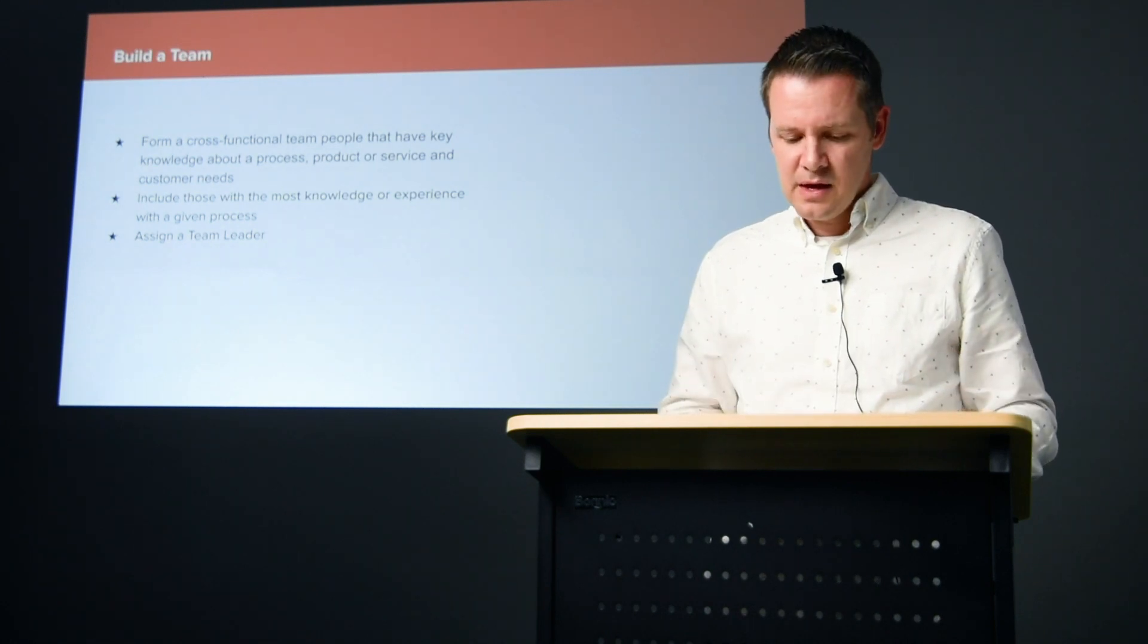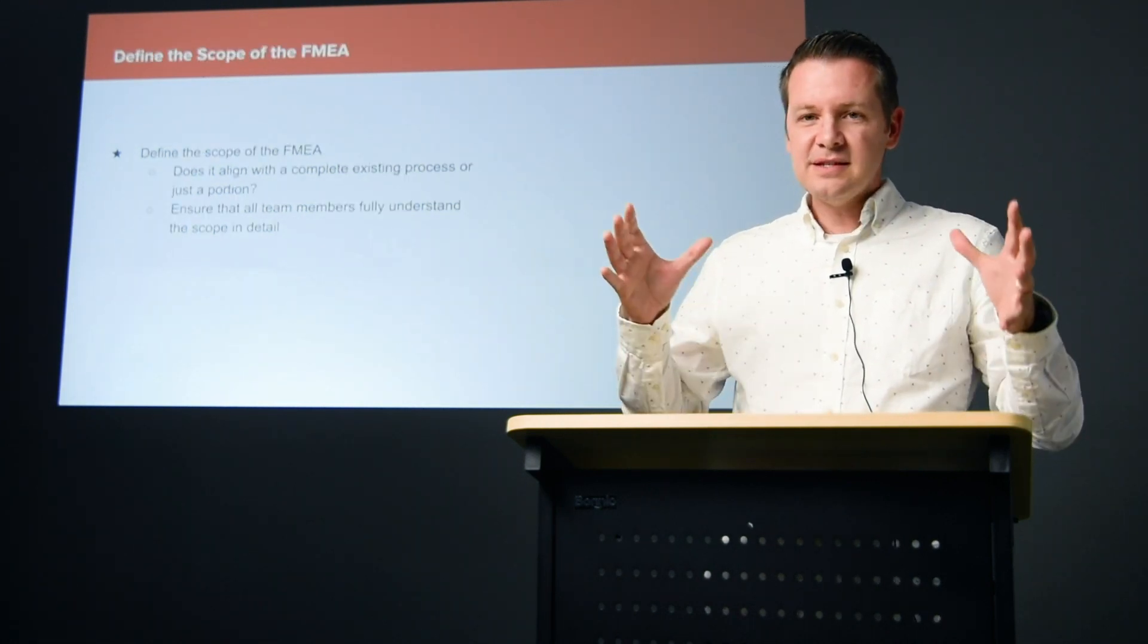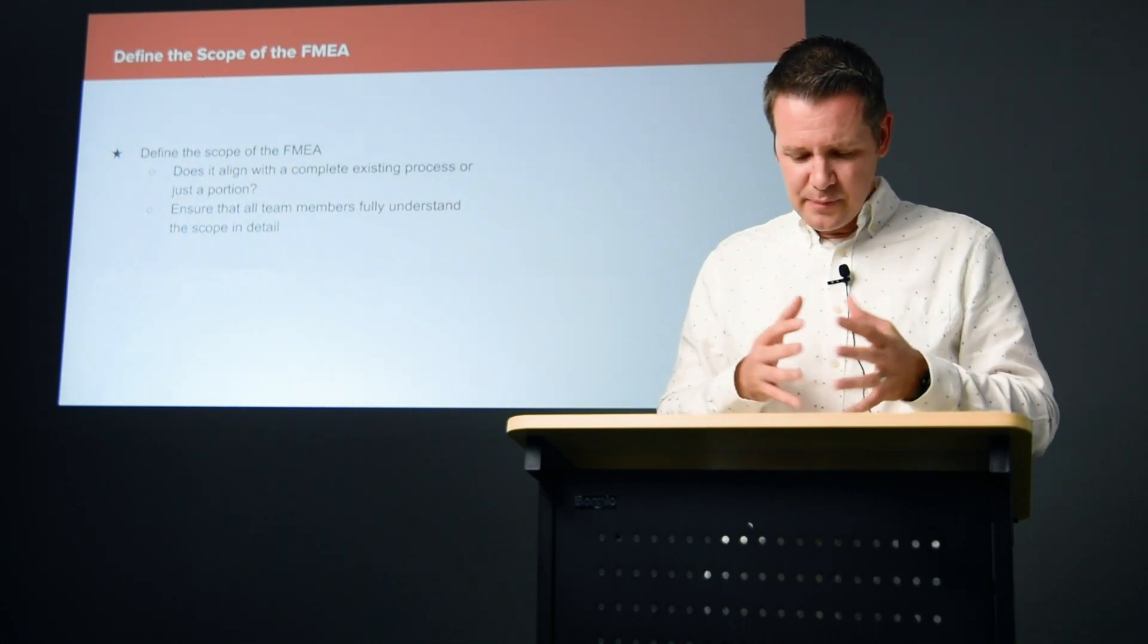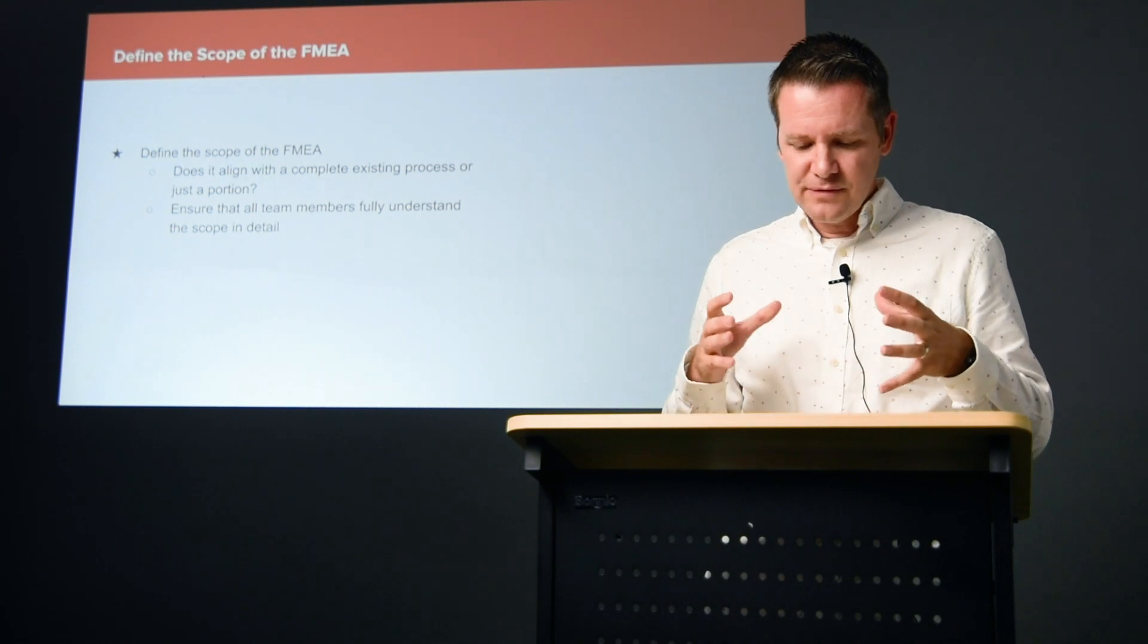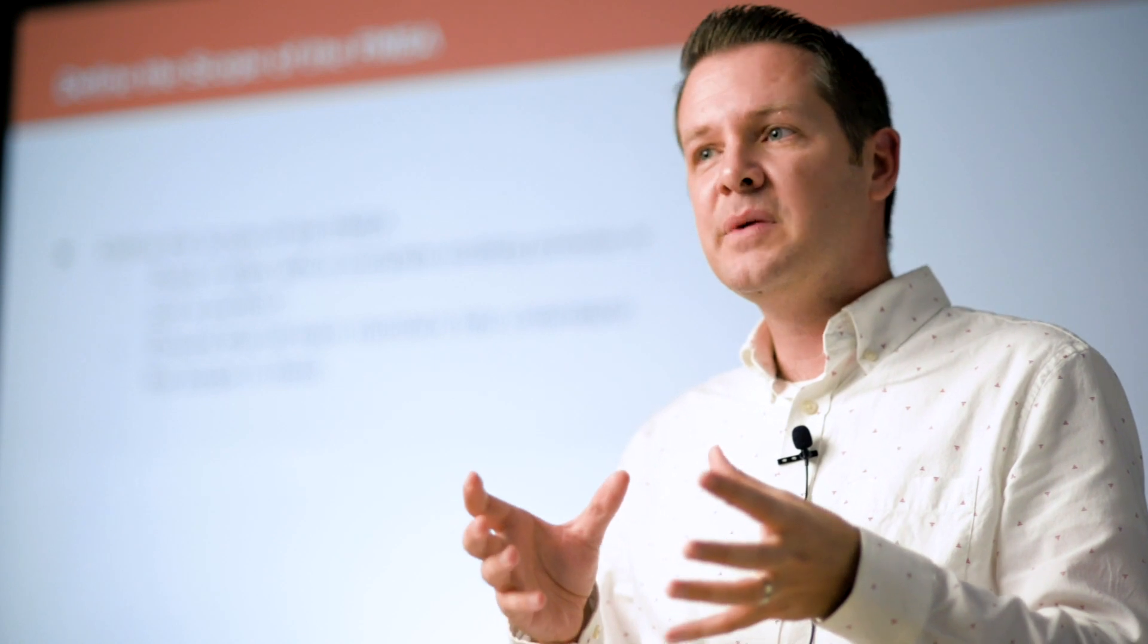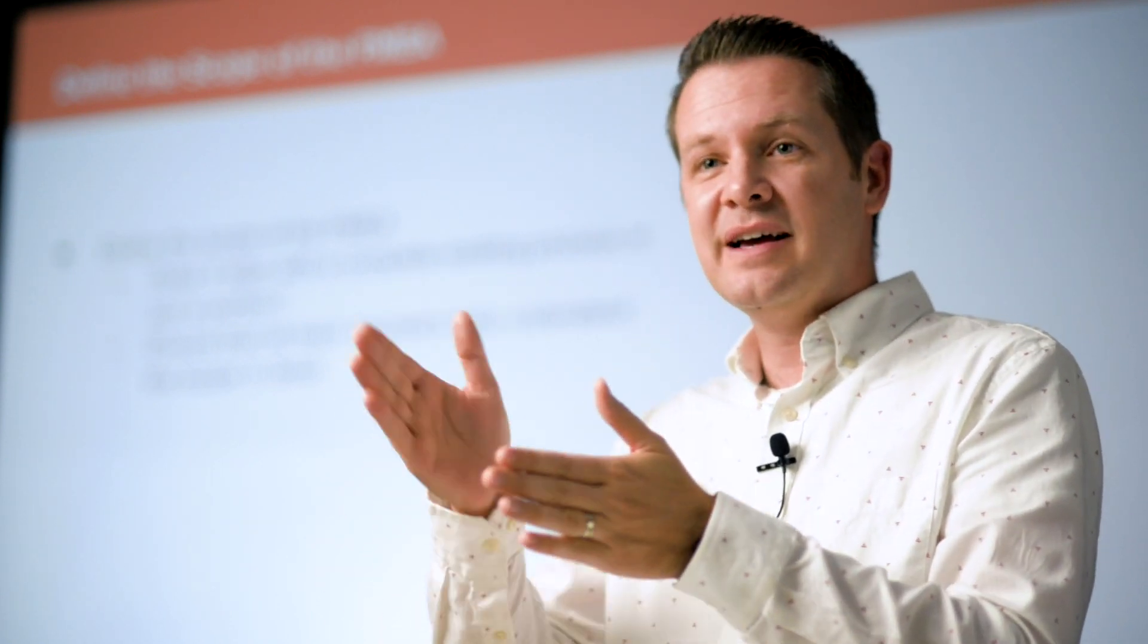As a team, the process starts by defining the scope of the FMEA. Normally an FMEA would match to the process map one-for-one. Sometimes, though, you might slice up a particular process to further break it down, so an FMEA could align to just a portion of the process map, in which case you'd be working with multiple tools.